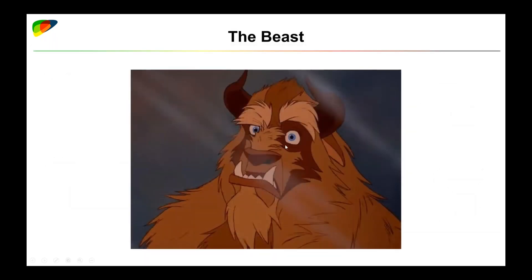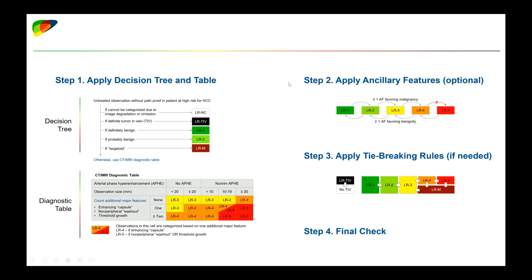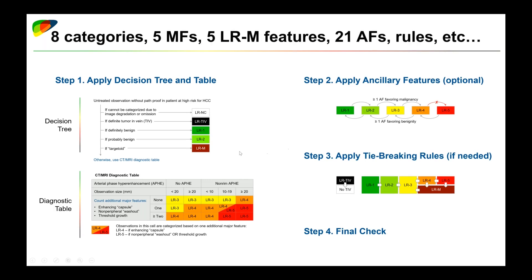Now let's discuss potential gaps or challenges with LIRADS. First, it is complex — it's not a one-to-three system. There is a learning curve and many things you need to know to apply it. We have four steps to arrive at a category; step one alone is quite long. We have eight categories, five major features to assign LR3, LR4, and LR5, five targeted LRM features, non-targeted LRM features, PNC features — 21 of them — and a bunch of rules to follow. This can be quite overwhelming for someone just beginning to learn the system.